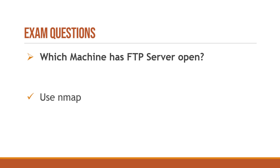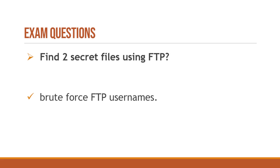Another question: which machine has the FTP server open? You need to run an nmap port scan on all the machines, and whichever machine has port 21 open has the FTP server. You input the IP address of that machine in the text box. Some questions are interlinked — having found the FTP machine, the next question asks you to find two secret files using FTP.